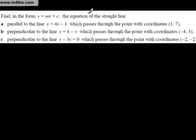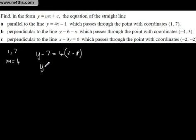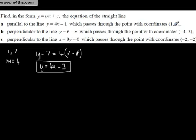Finding the equation of a straight line in the form y equals Mx plus C: the line is parallel to y equals 4x minus 1 and goes through the point (1, 7). The gradient is 4 and our coordinates are (1, 7). Using y minus y1 equals M times x minus x1, we get y equals 4x minus 4 plus 7, giving us y equals 4x plus 3.